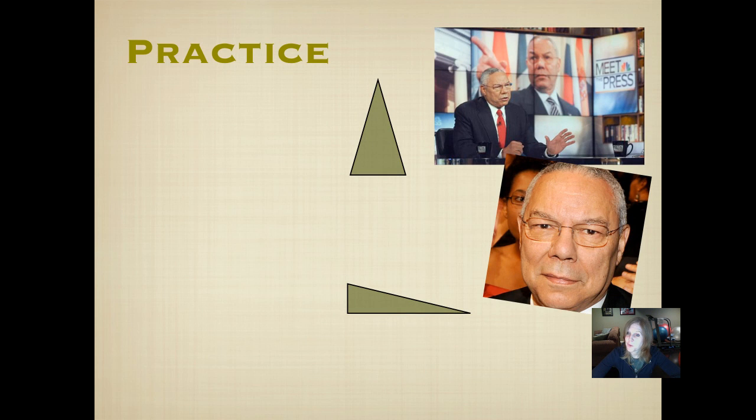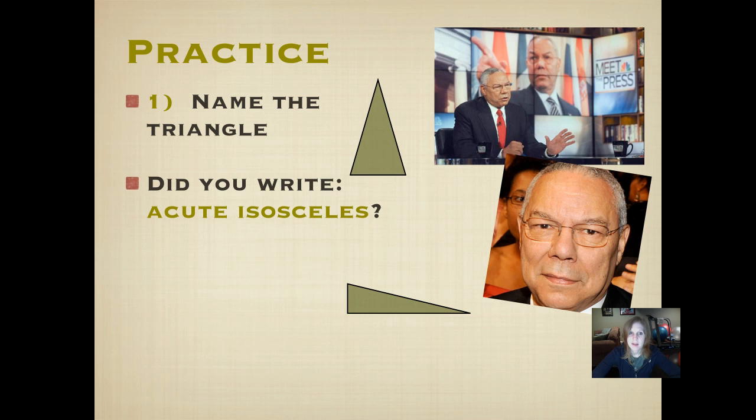Now we're going to do some more practice. Name this triangle. Name it by its sides and its angles. Did you write acute isosceles? You can see that all three of those angles are less than 90 degrees, so they're acute little angles. Isosceles means that two of those sides are the same length, the two pointy ones, to the top. That base is a different length.